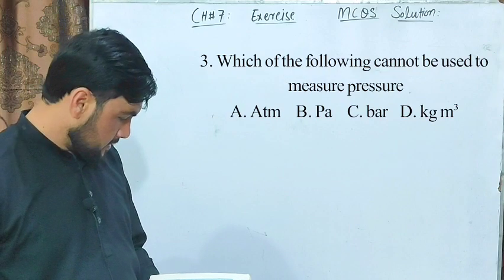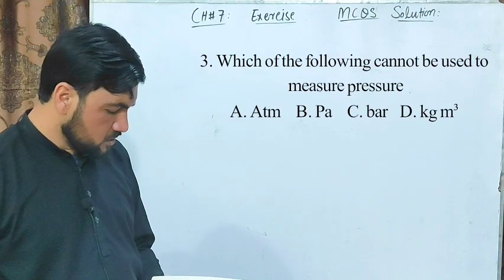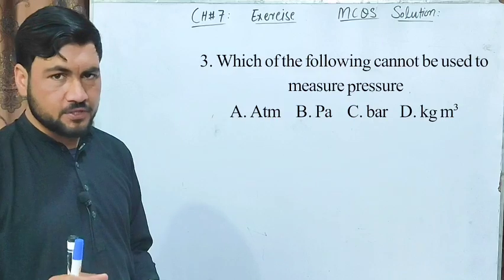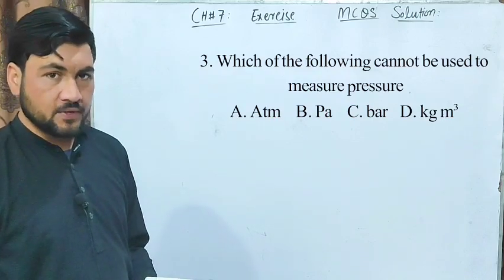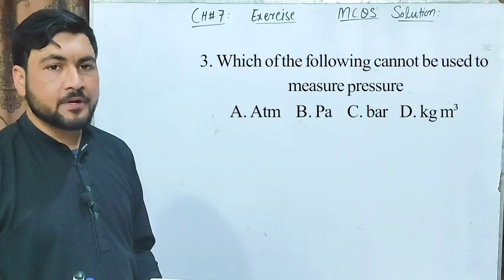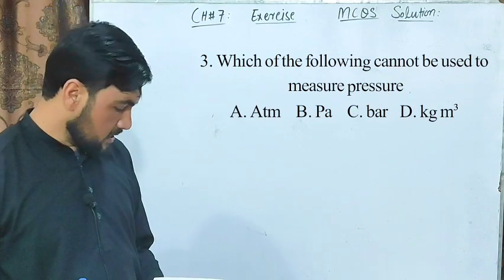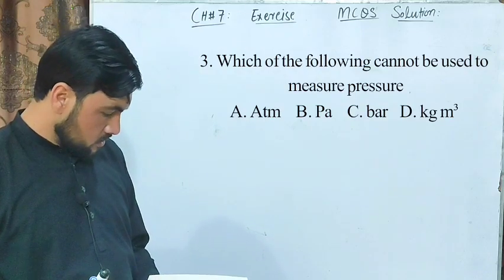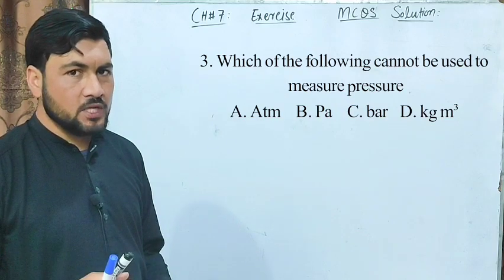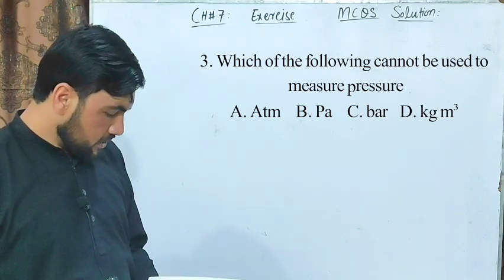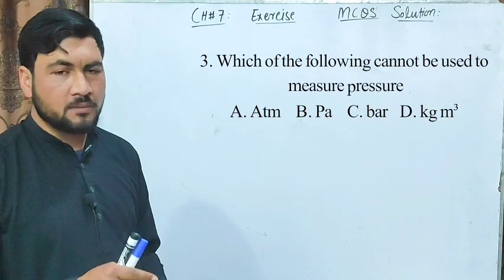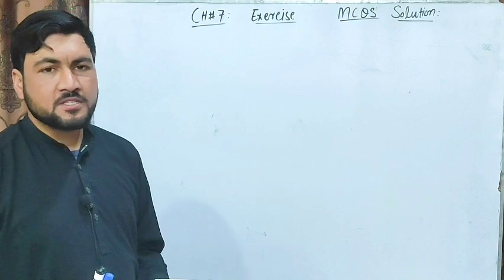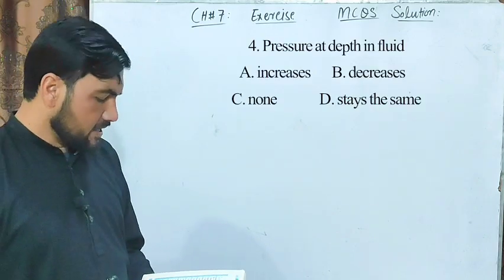MCQ number 3 statement: which of the following cannot be used to measure pressure? Let's look at the options. Option A: atm (atmospheric pressure) — this is a unit of pressure. Option B: pascal — unit of pressure, newton per meter square. Option C: bar — used on weather maps. Option D: kilogram per meter cube — this is the unit of density, so it cannot be used to measure pressure. Correct option is D.